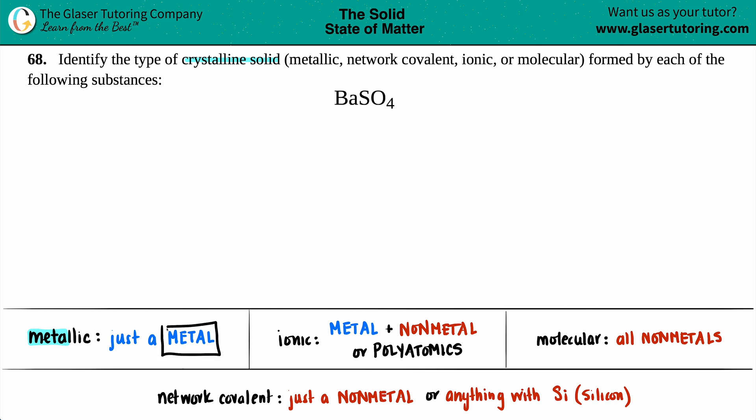But in this case I have barium, which on the periodic table is in group two, so this is a metal. But I have sulfur and I have oxygen. Both of those are non-metals, and I can see SO4, right? This is sulfate. Sulfate is one of those polyatomics.